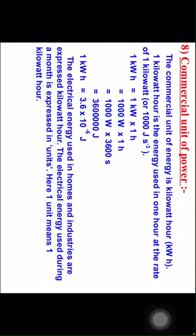Commercial unit of energy: the commercial unit of energy is kilowatt hour. 1 kilowatt hour is the energy used in 1 hour at the rate of 1 kilowatt or 1000 joules per second. 1 kilowatt hour equal to 1 kilowatt into 1 hour, so 1000 watts into 3600 seconds, giving a total of 3,600,000 joules. So 1 kilowatt hour equal to 3.6 into 10 to the power 6 joules. The electric energy used in homes and industries is expressed in kilowatt hours. The electric energy used during a month is expressed in units, where one unit means one kilowatt hour.